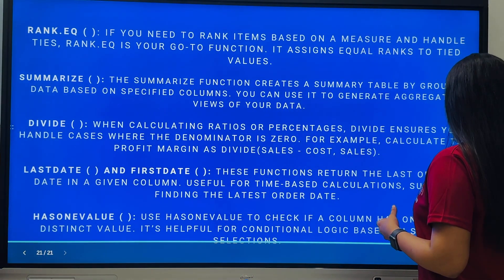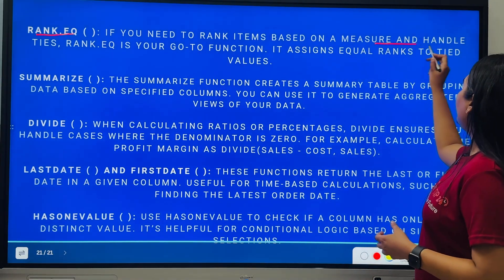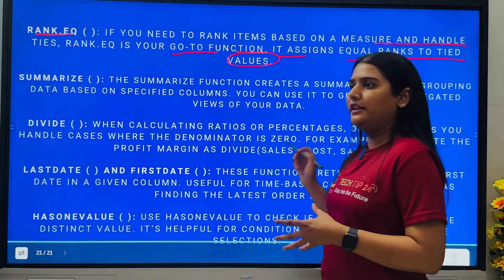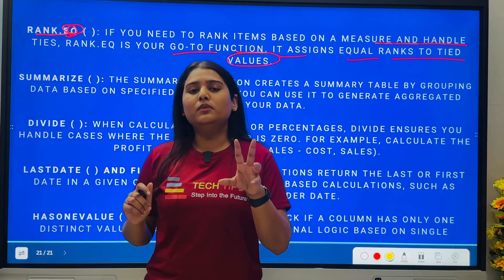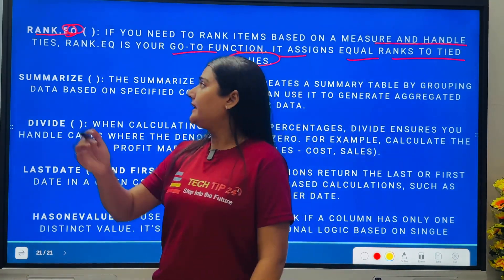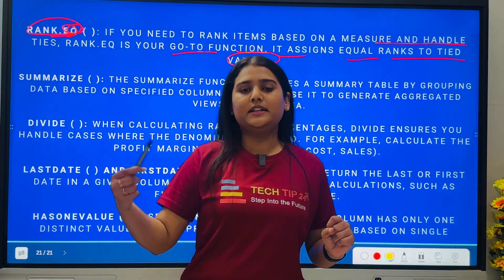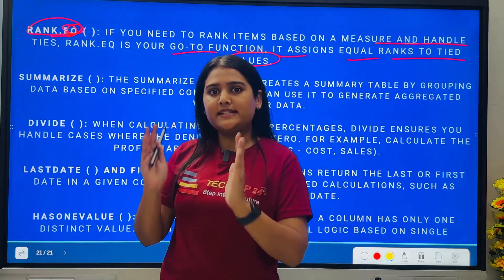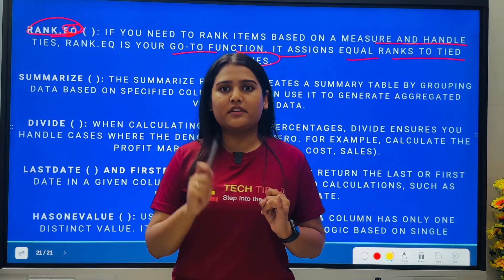Now let's look at five more DAX functions, starting with RANK.EQ. If you need to rank items based on a measure and handle ties, RANK.EQ is your go-to function — it assigns equal ranks to tied values. For example, if 100 products exist and four or five have equal sales, RANK.EQ gives them the same rank. A simple RANK would assign 1, 2, 3, 4 irrespective of equal sales values. Note the difference between RANK, RANKX, and RANK.EQ — this will definitely come up in interviews.